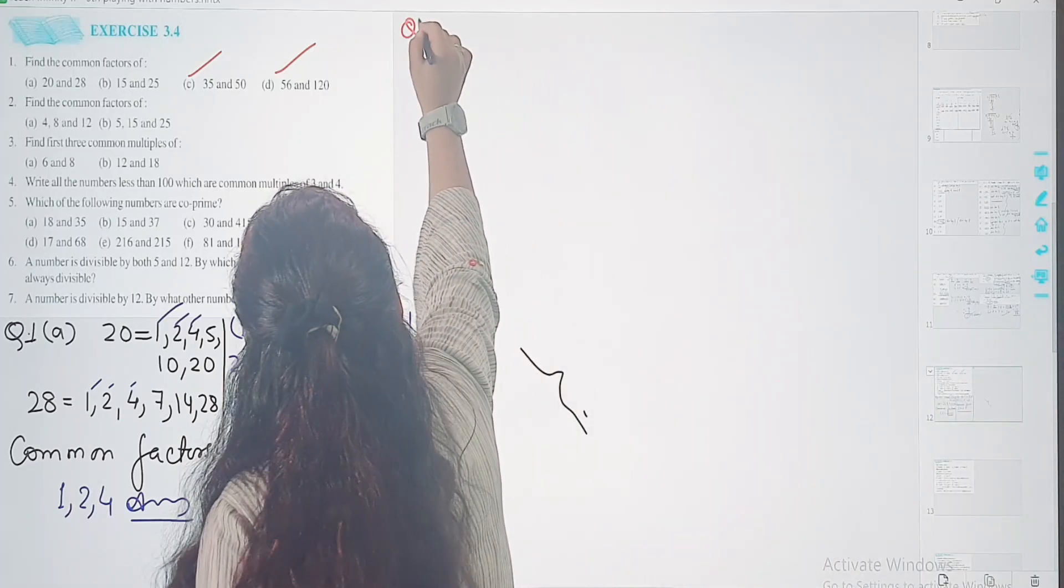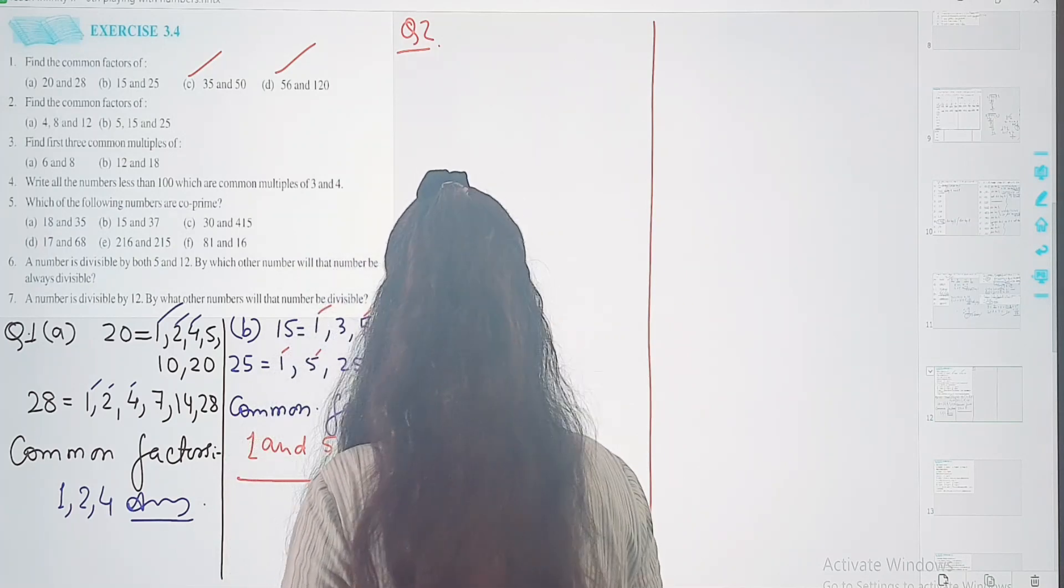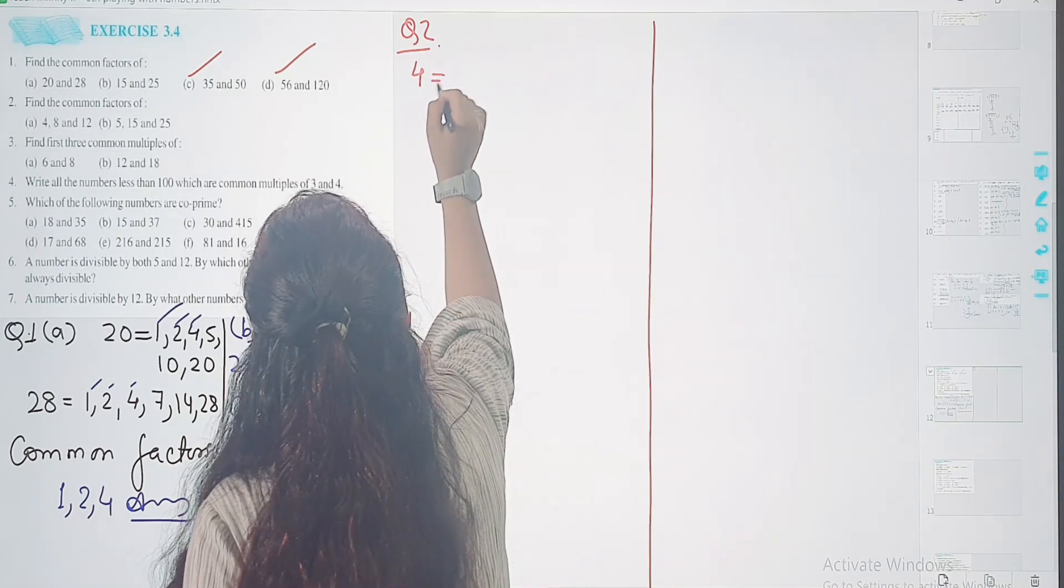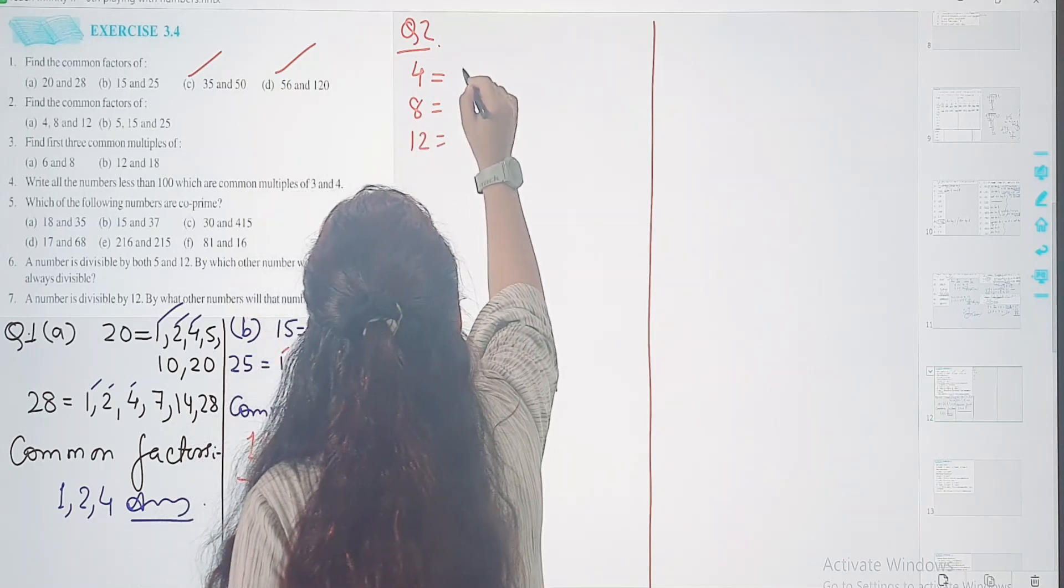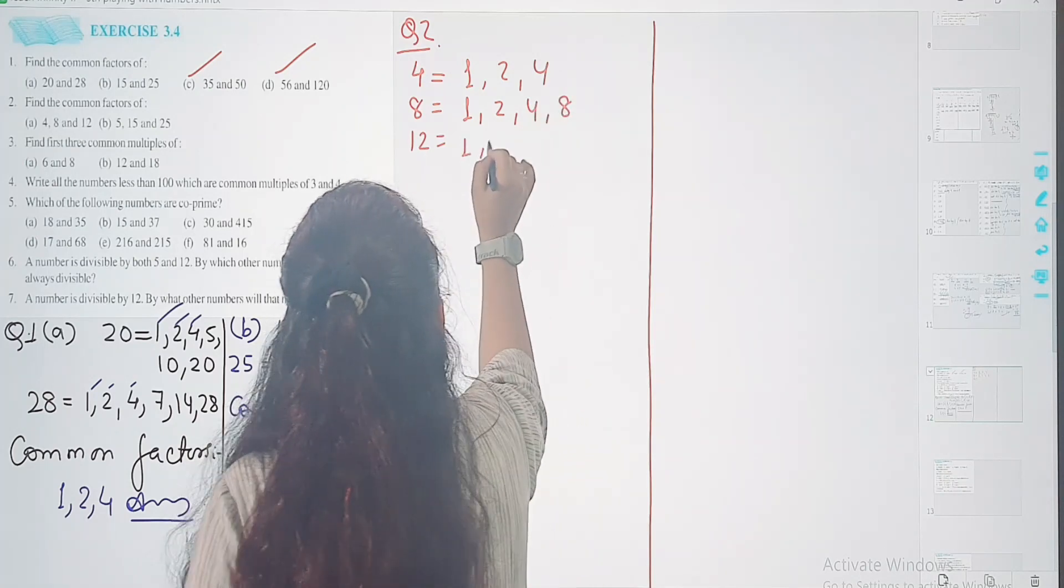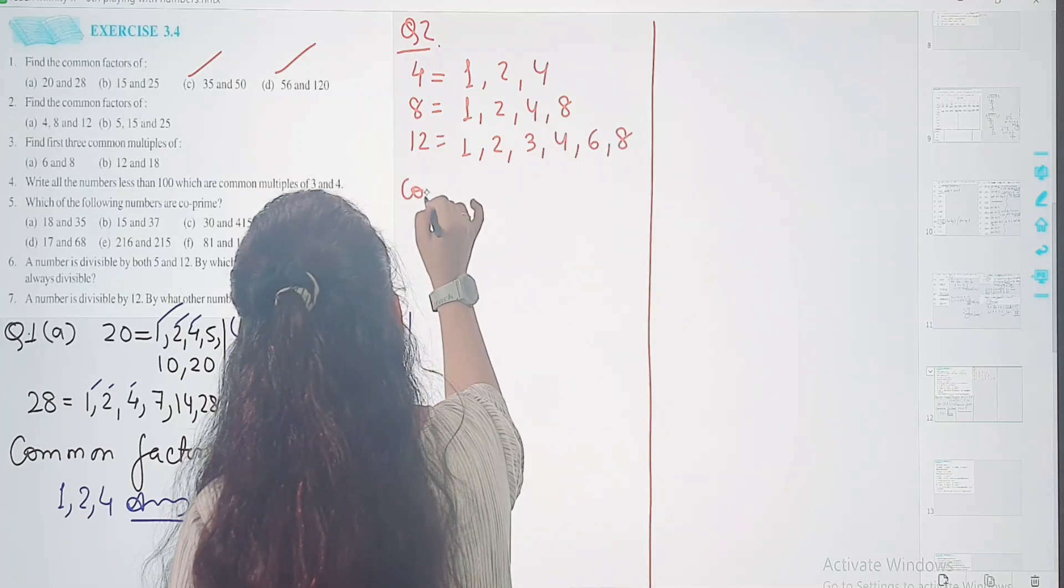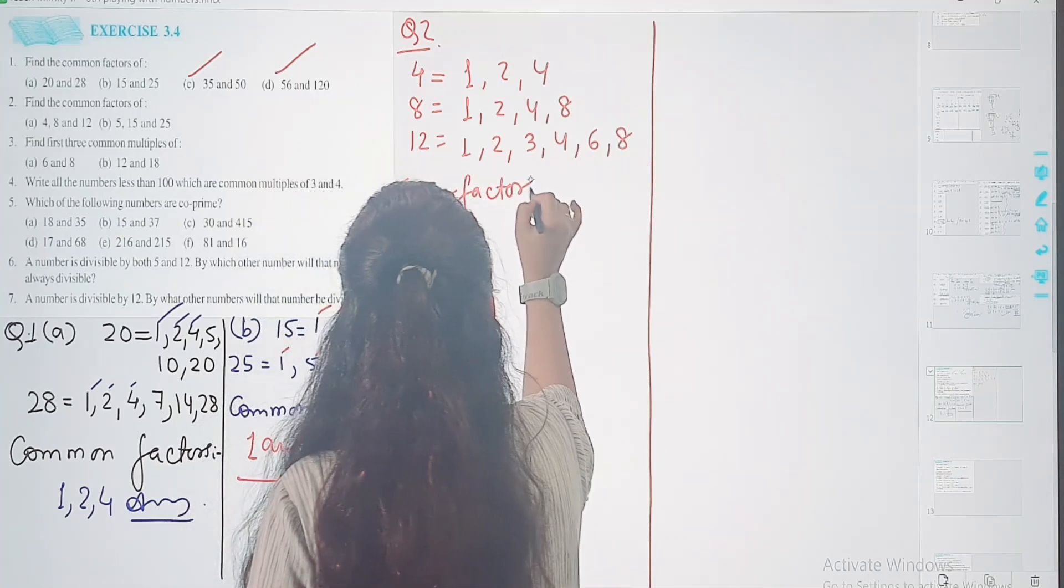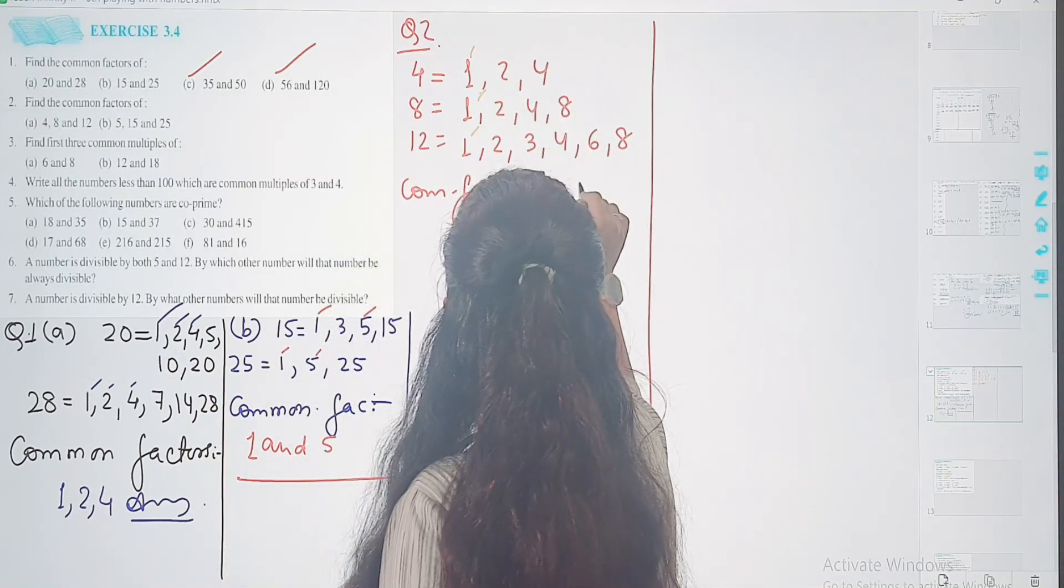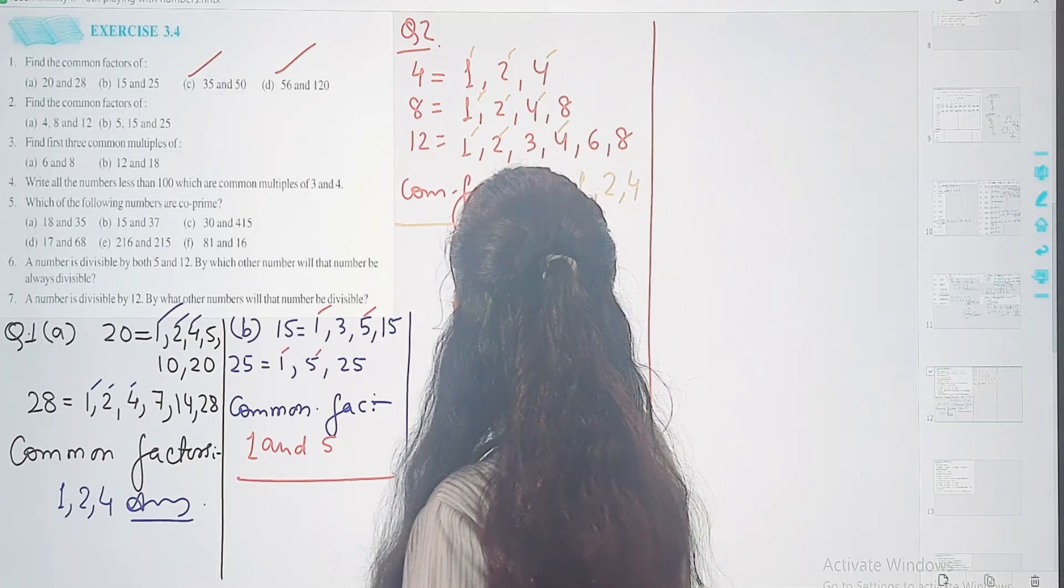Let's start question number 2. Find the common factors of 4, 8, and 12. 4: 1, 2, and 4. 8: 1, 2, 4, and 8. 12: 1, 2, 3, 4, 6, and 12. So common factors will be what? 1, 3 ho mein hai, write down 1. 2, 3 ho mein hai, write down 2. 4, 3 ho mein hai, write down 4. Khatam.